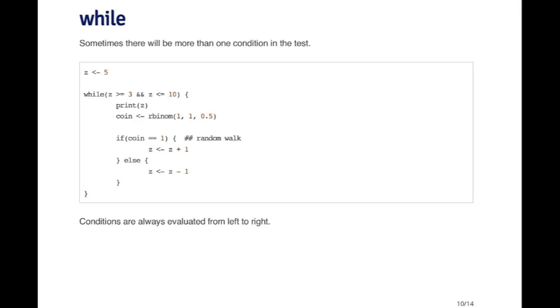So one thing to note on a more technical level is that the conditions, when R tests the condition in a multi-expression condition. Here I've got z greater than or equal to 3 and z less than or equal to 10. The conditions are always evaluated from left to right.